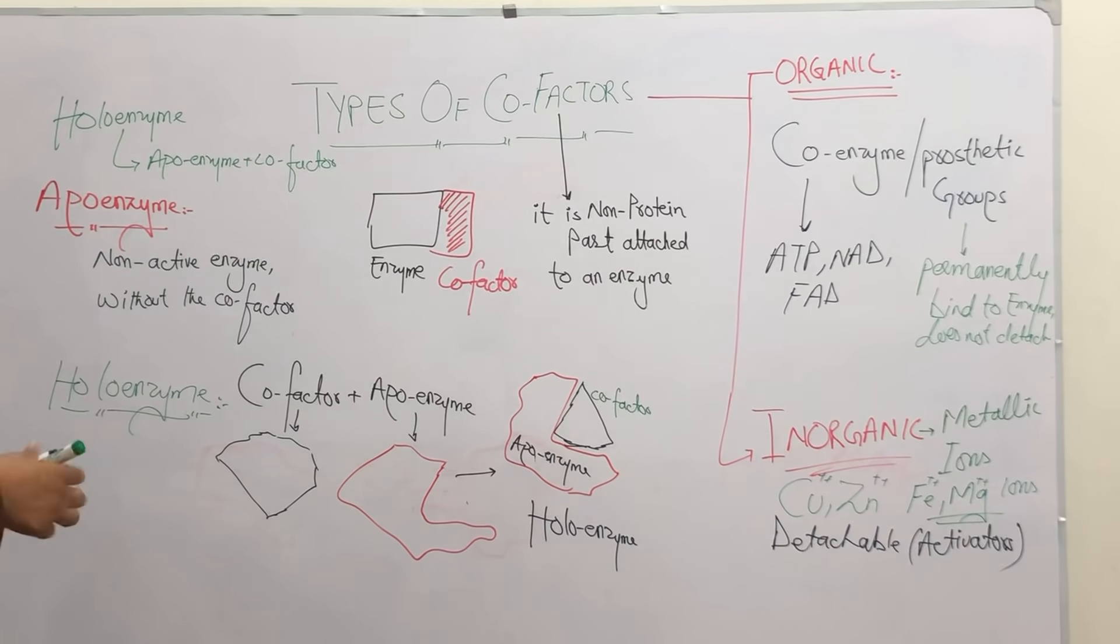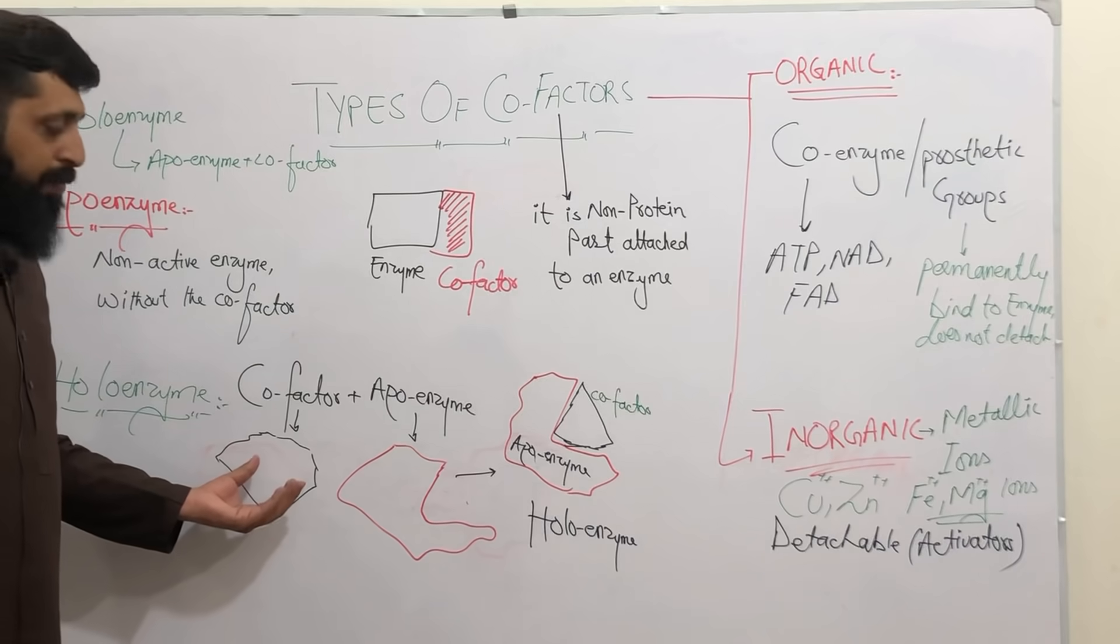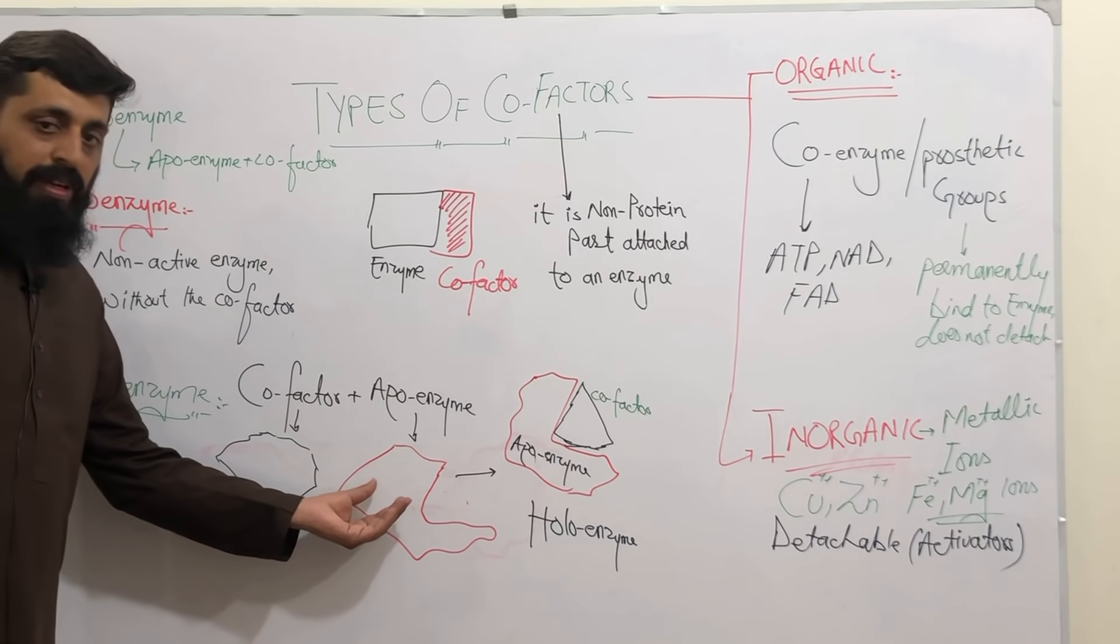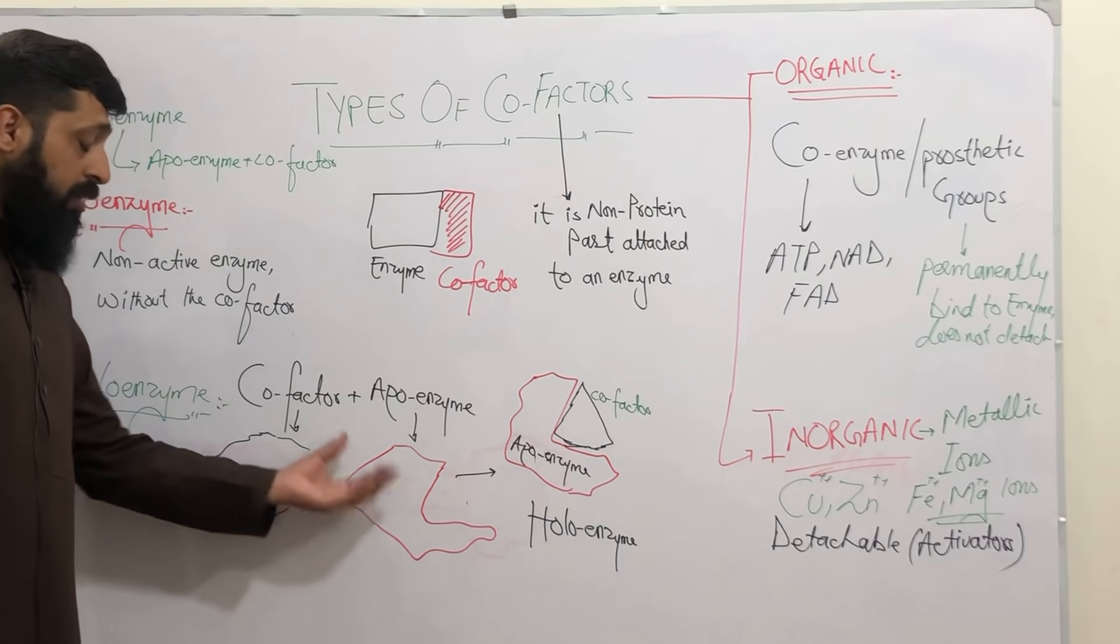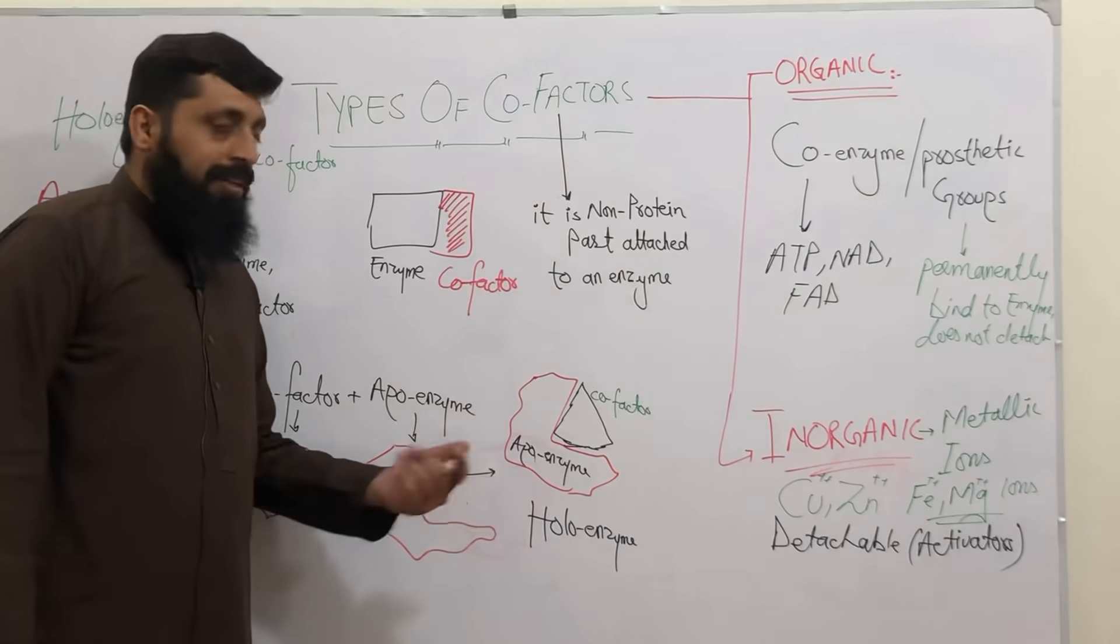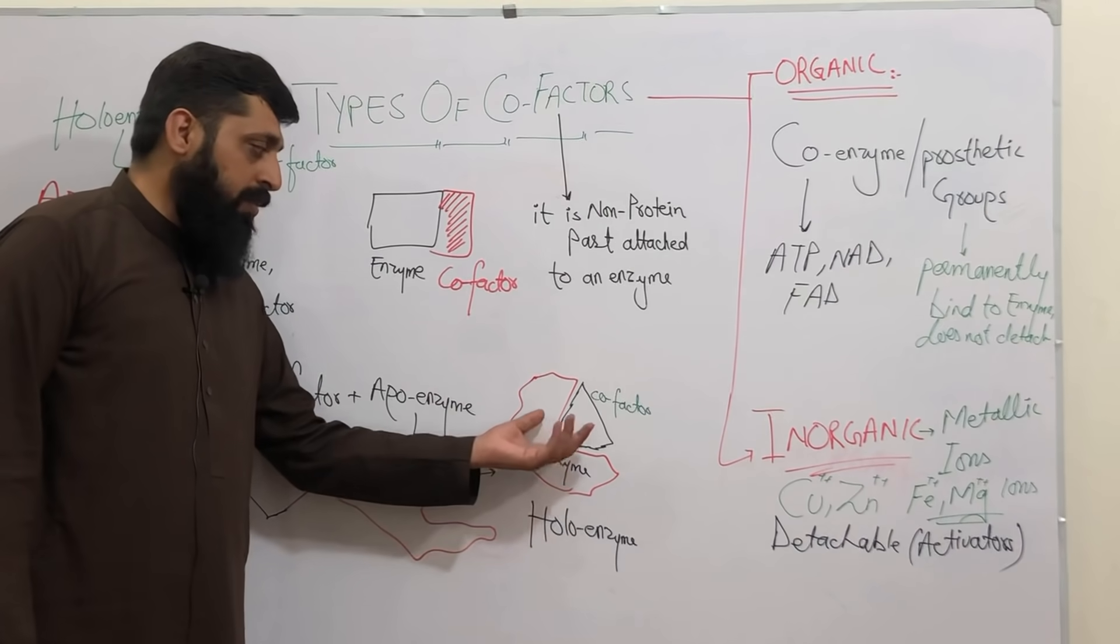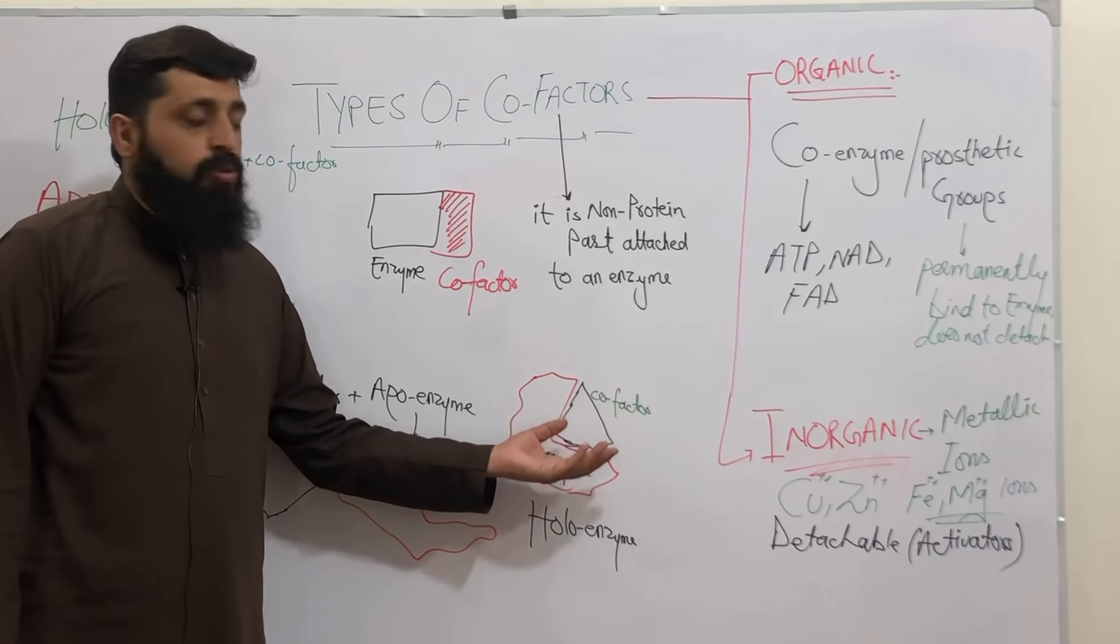Diagrammatically, if we try to understand through structure: this is the cofactor part, this is the apoenzyme - the functional part of the enzyme and this is the non-protein part. When these both join through bonding, it is called holoenzyme. In holoenzyme, cofactor bhi mojud hai aur apoenzyme bhi mojud hai.